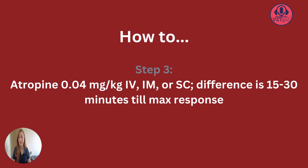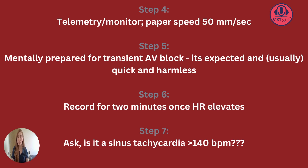Provide Atropine at a dose of 0.04 mg/kg. Strongly recommend giving it IV — that is the most predictable, reliable route and will provide the fastest results in about 15 minutes. Ideally the patient would be connected to telemetry during this process, but if you don't have enough people to monitor the entire time, you could step away briefly after administration. Just don't step away too long, because you don't want to miss the response and you want to catch any side effects. Make sure your paper speed is 50 millimeters per second, which will allow you to see the most detail in the ECG.